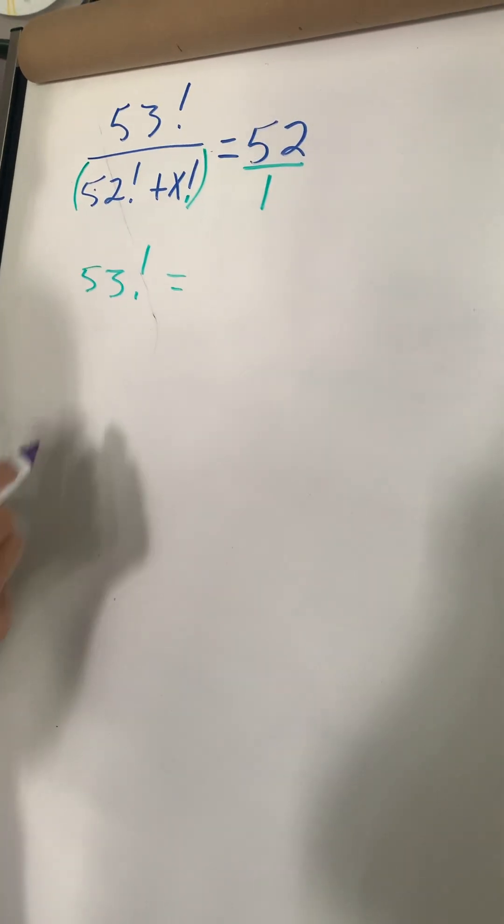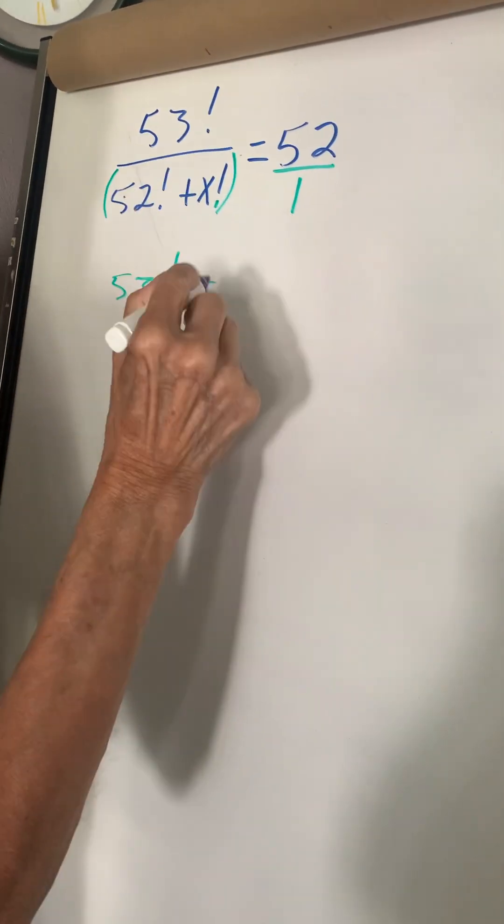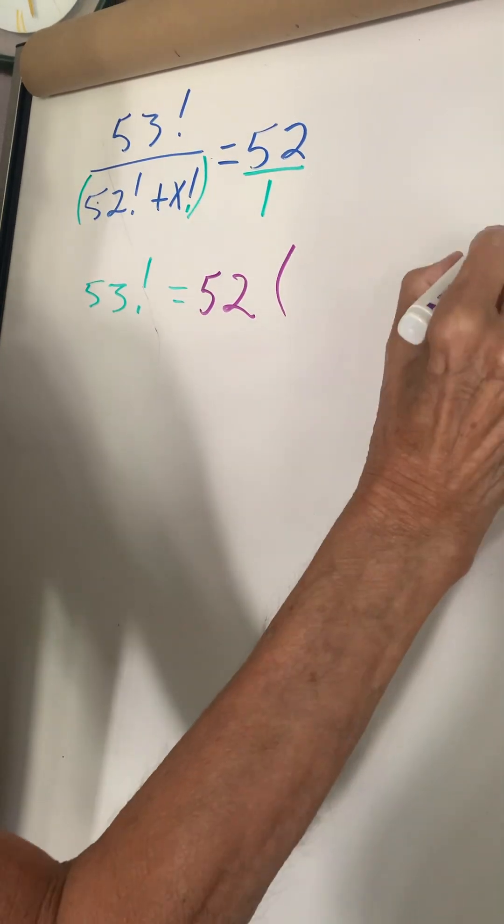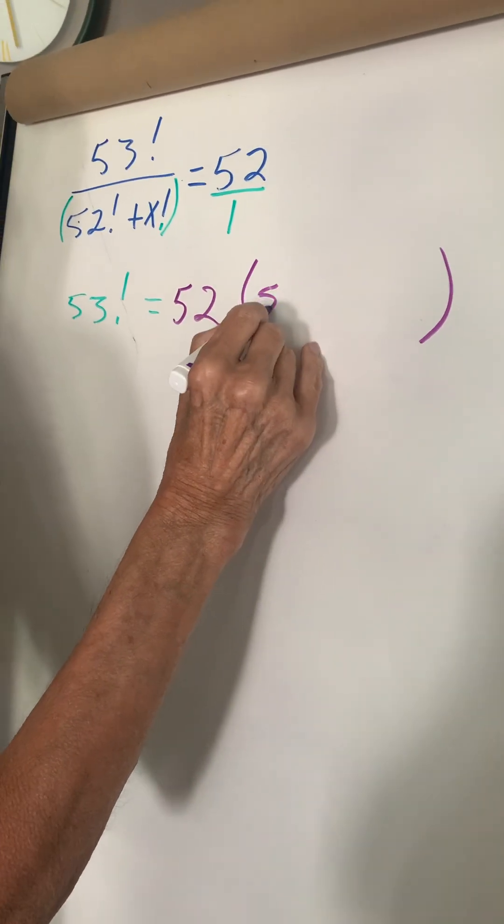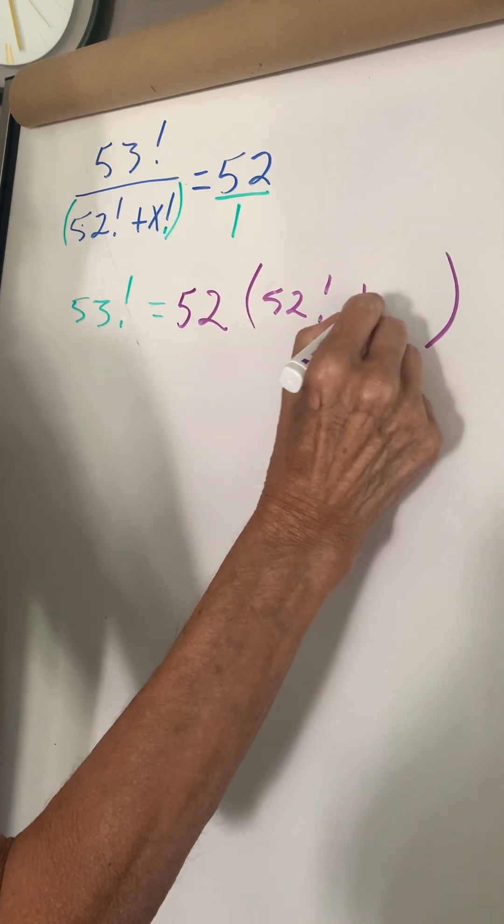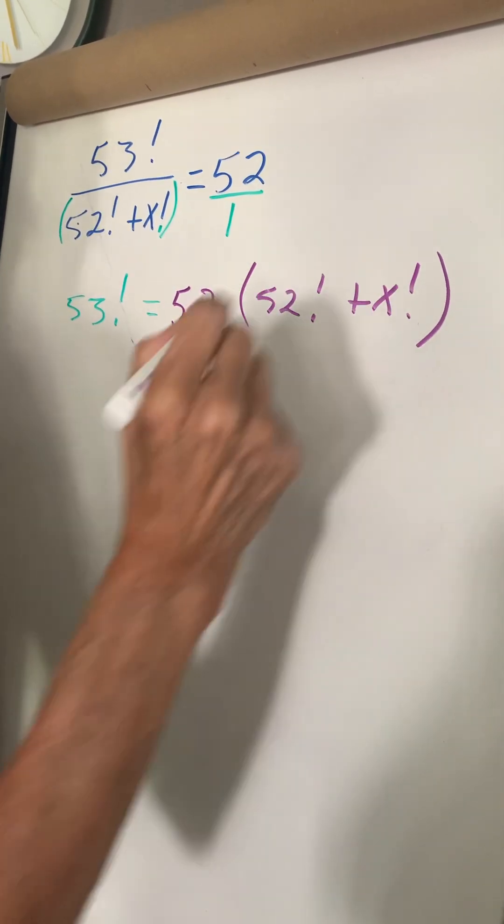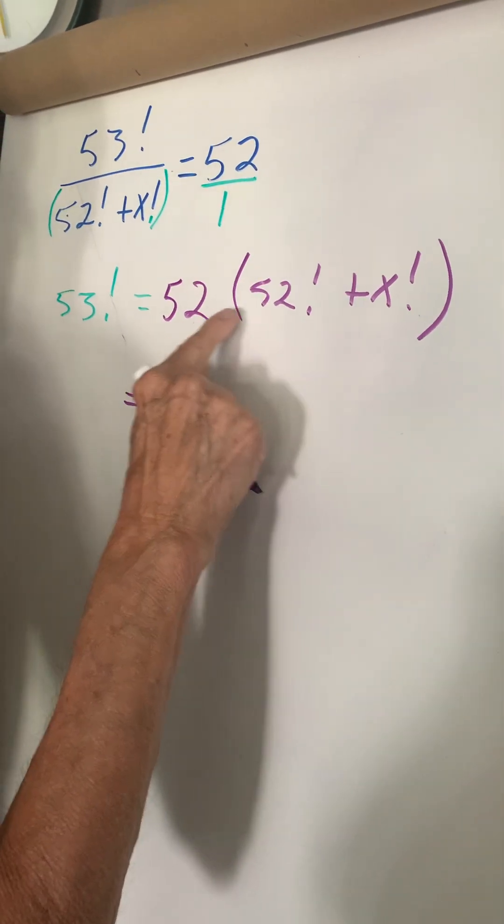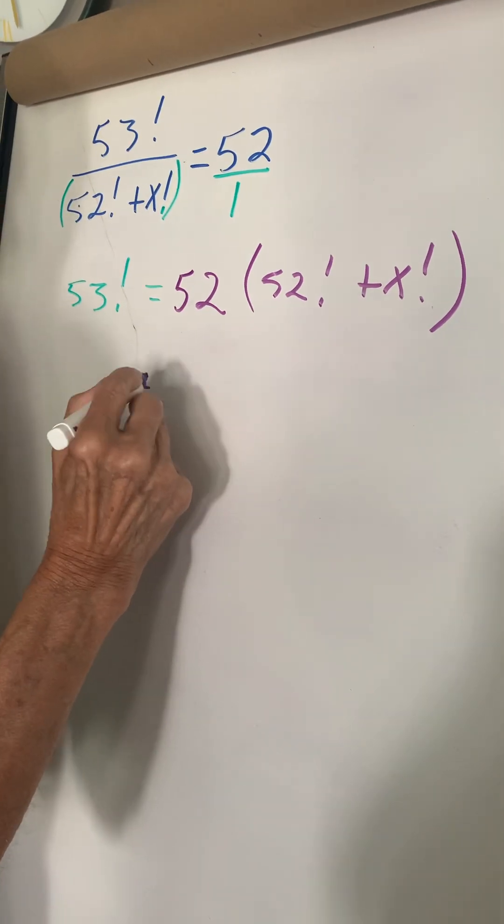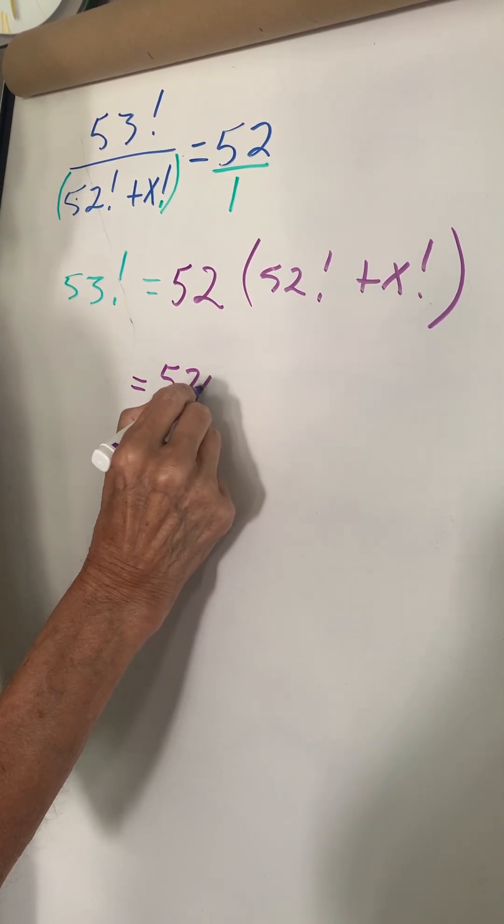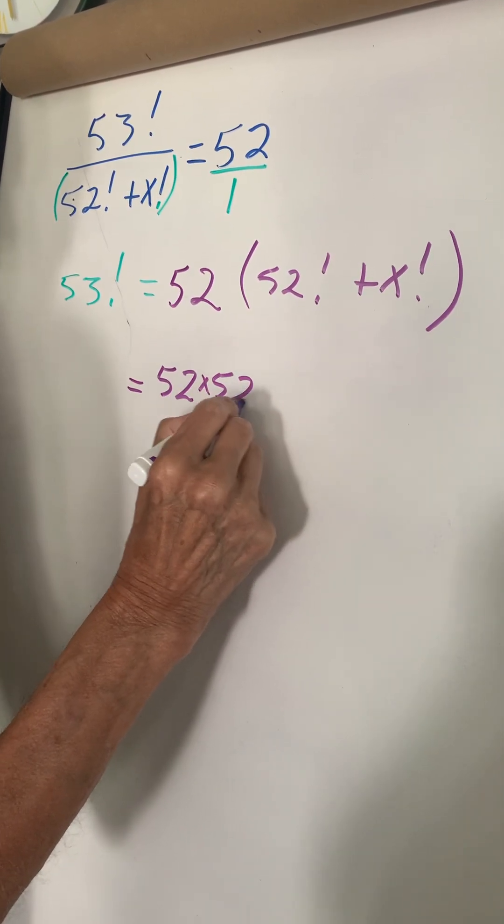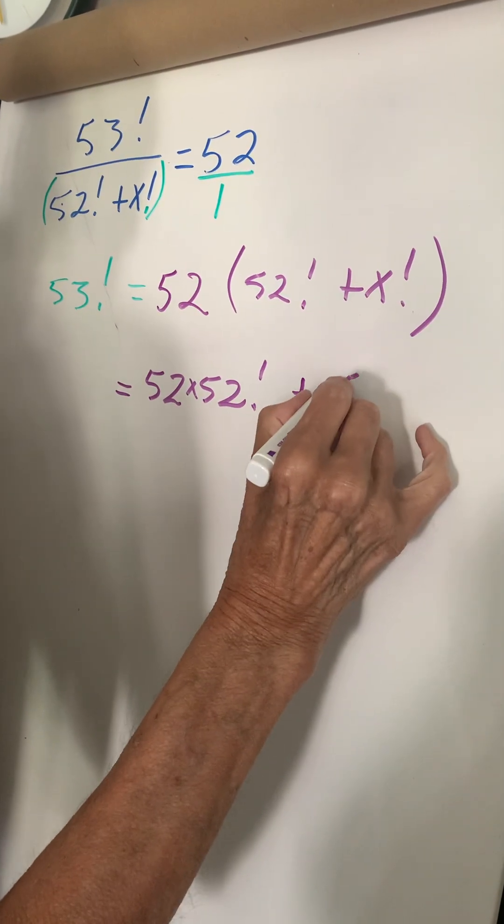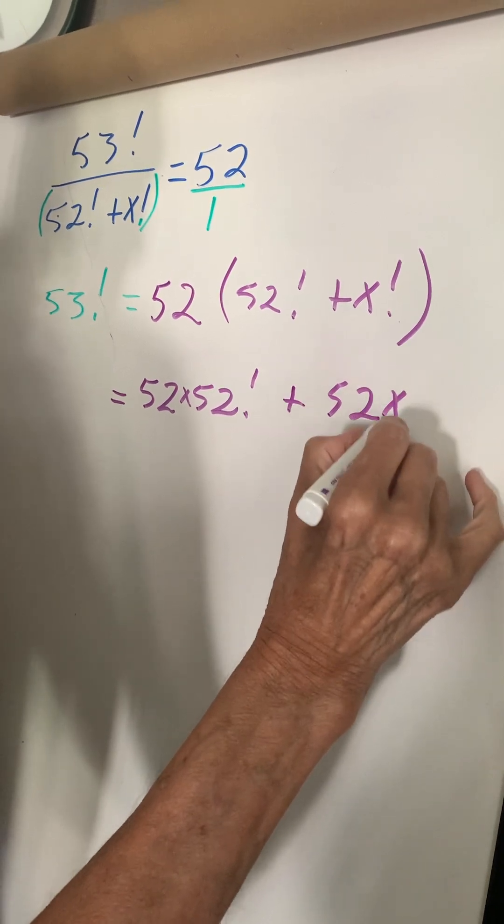Okay, now it'll be this times 52 will be 52 times 52 factorial plus x factorial. And now we expand this times this. 52 times 52 factorial, and this times this is plus 52 times x factorial.